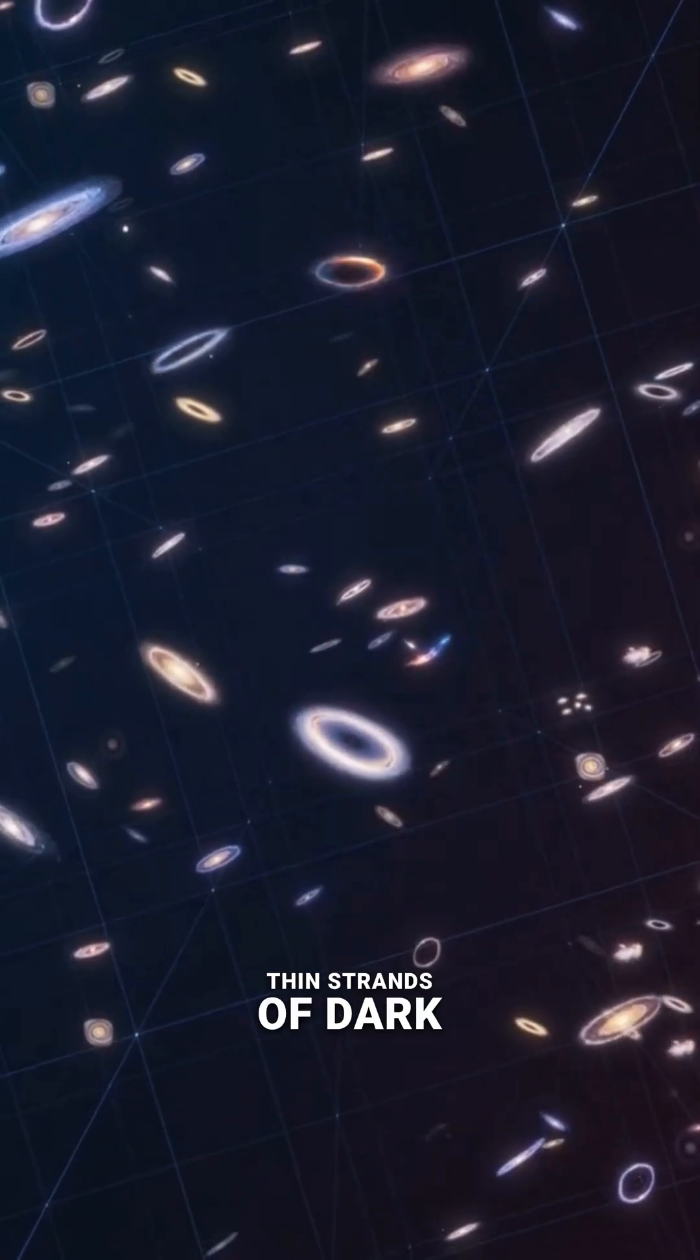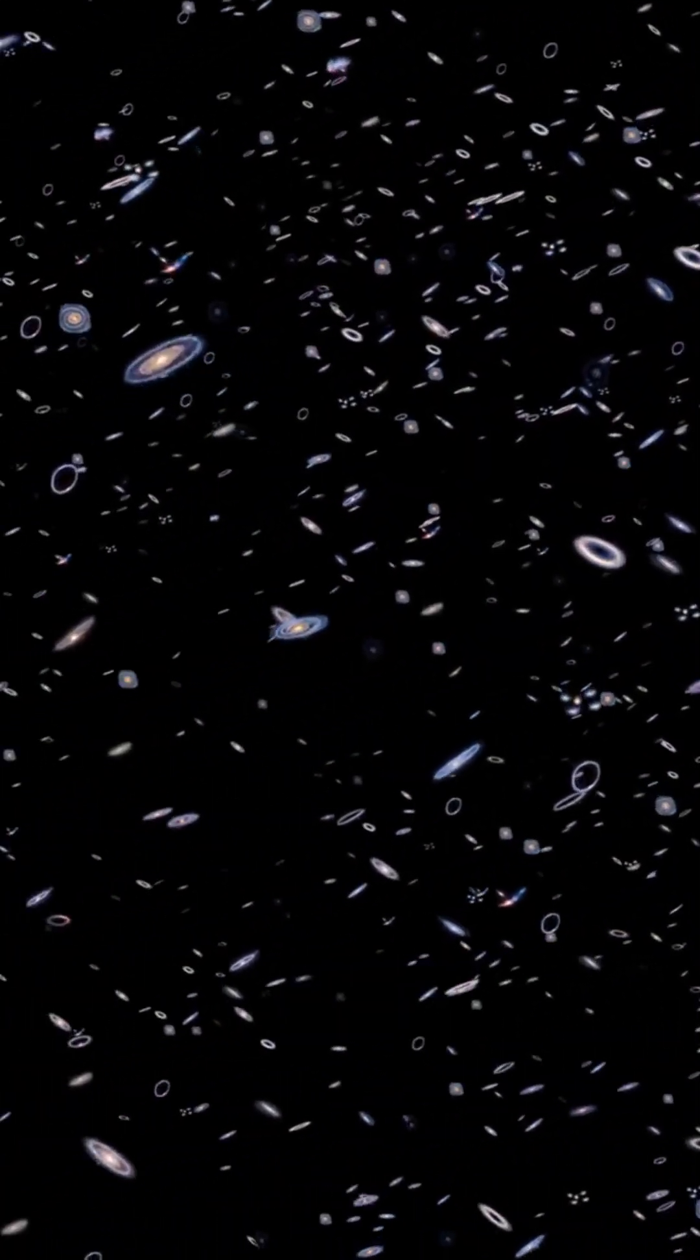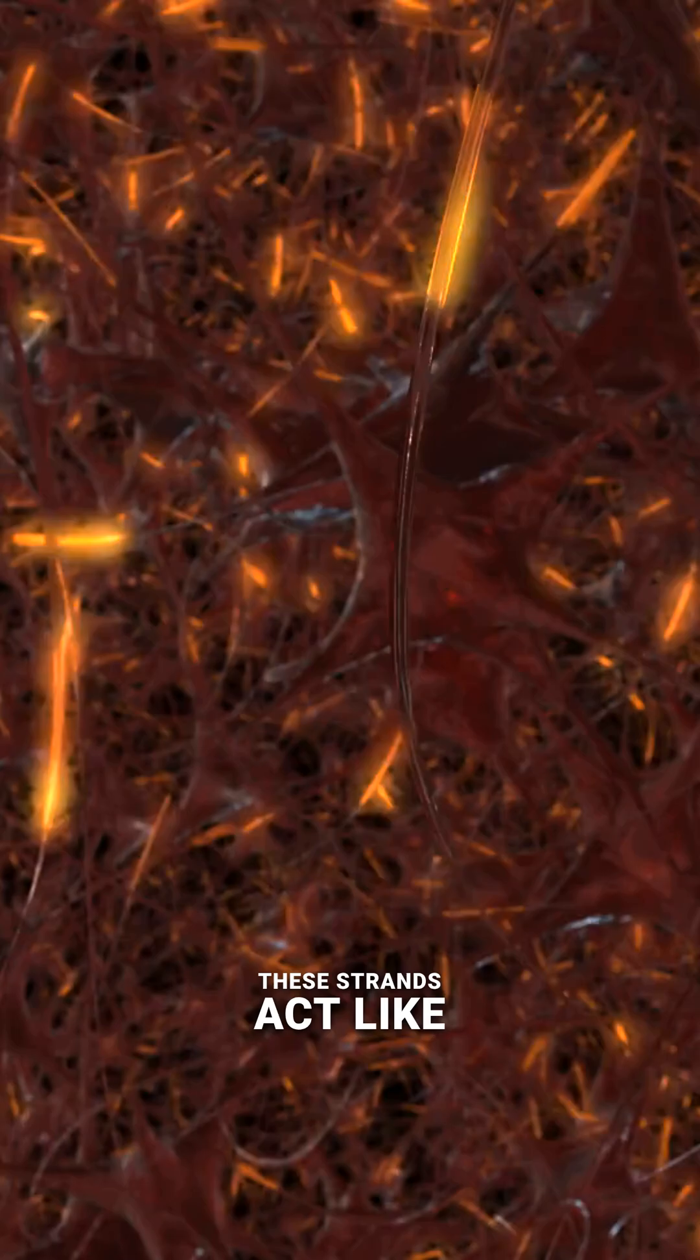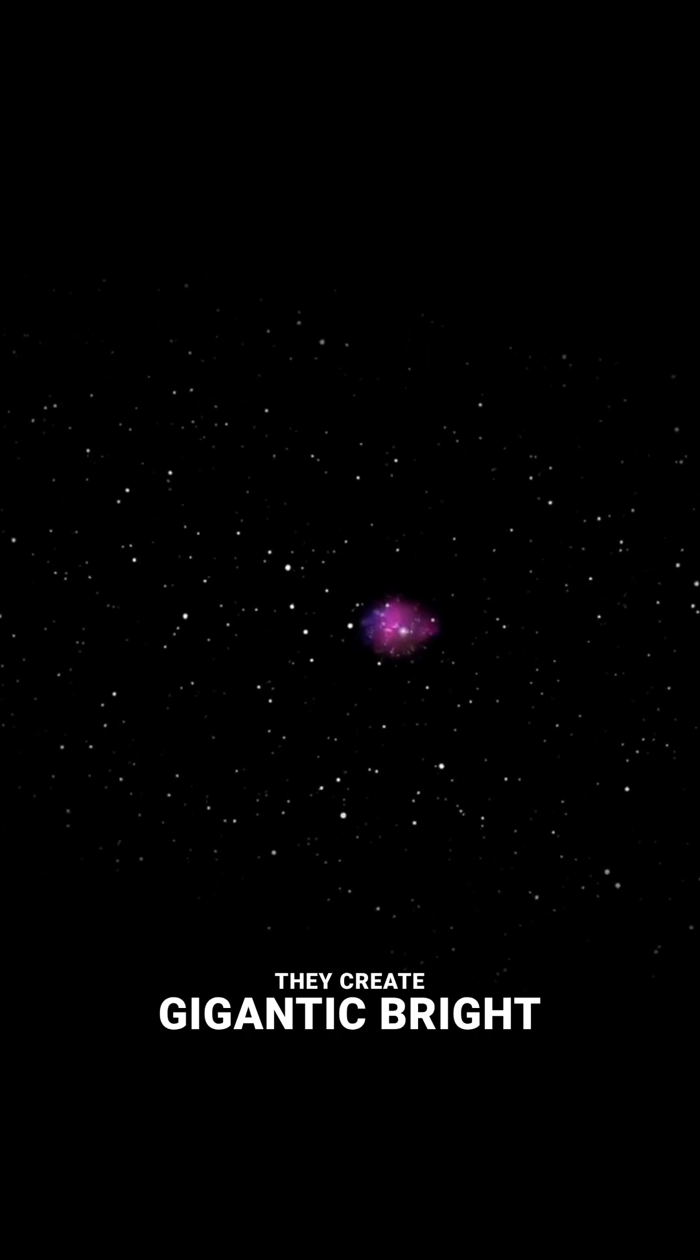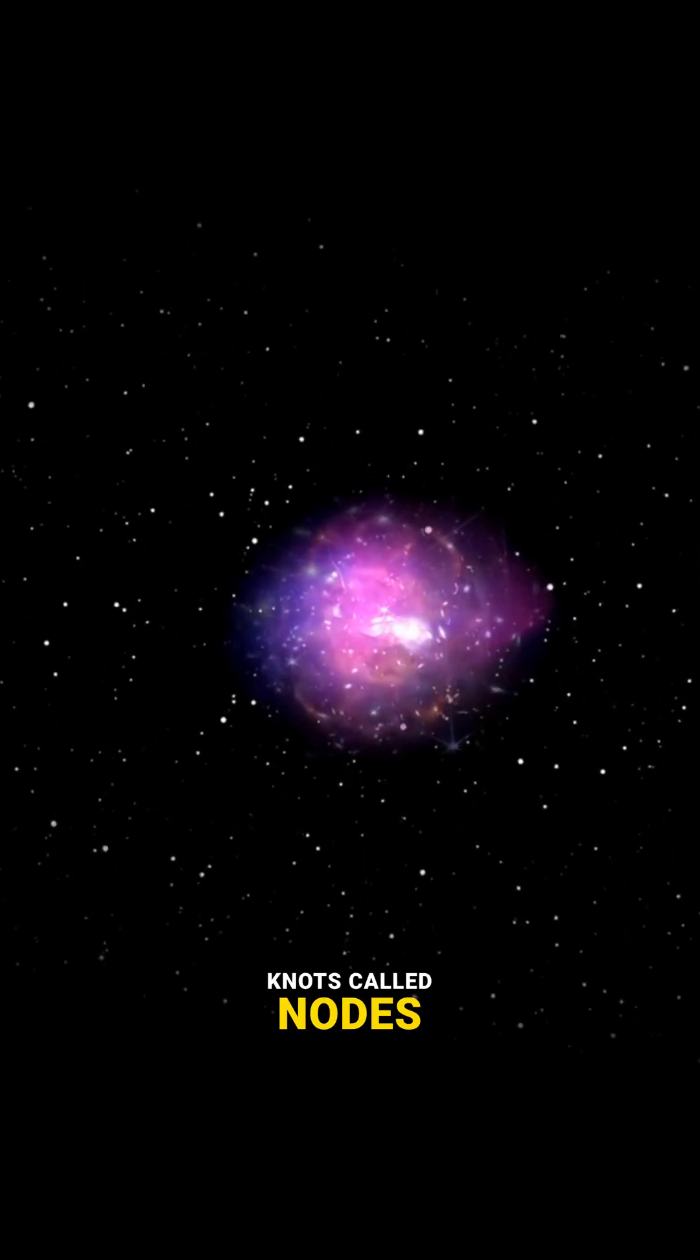The filaments are long, thin strands of dark matter and hot gas. These strands act like cosmic highways, funneling matter towards the densest regions. Where those filaments cross or intersect, they create gigantic, bright knots called nodes.